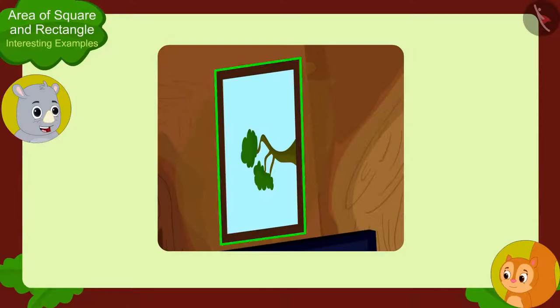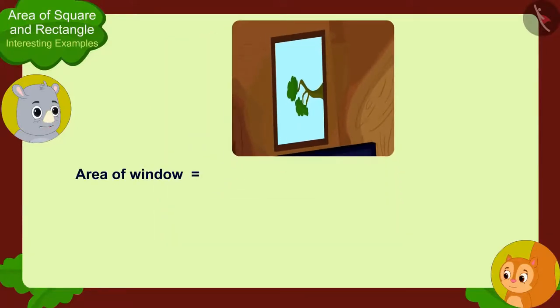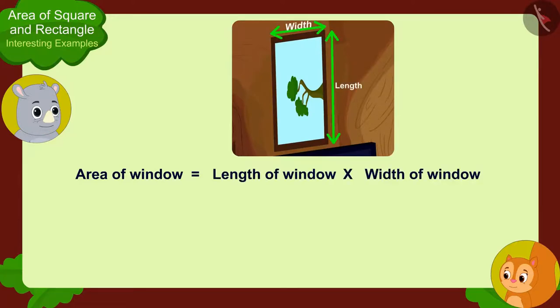Now, because your window is rectangle shaped, we only have to multiply the length of the window by the width of the window to find the area of the glass in your window pane. In this way, the area of your glass will be five times one, five square meters.